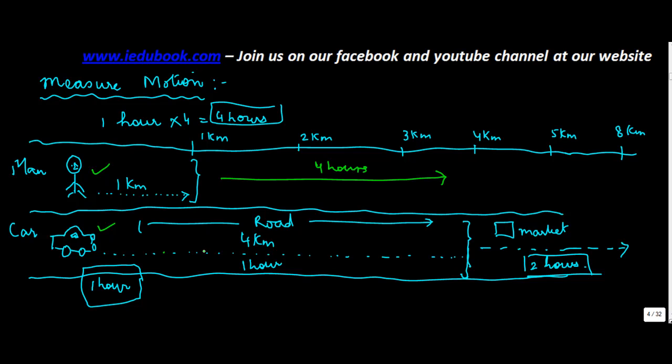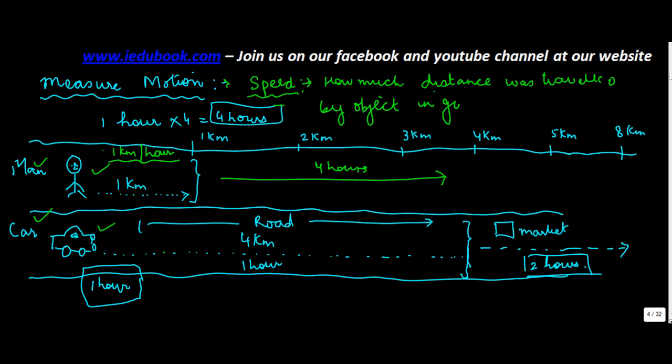Because of all these problems, to measure motion we consider something called speed. To measure motion we say that the speed of the man is one kilometer per hour. When we say the speed of the person is one kilometer per hour, what we say is how much distance the distance was traveled by object in given unit of time.